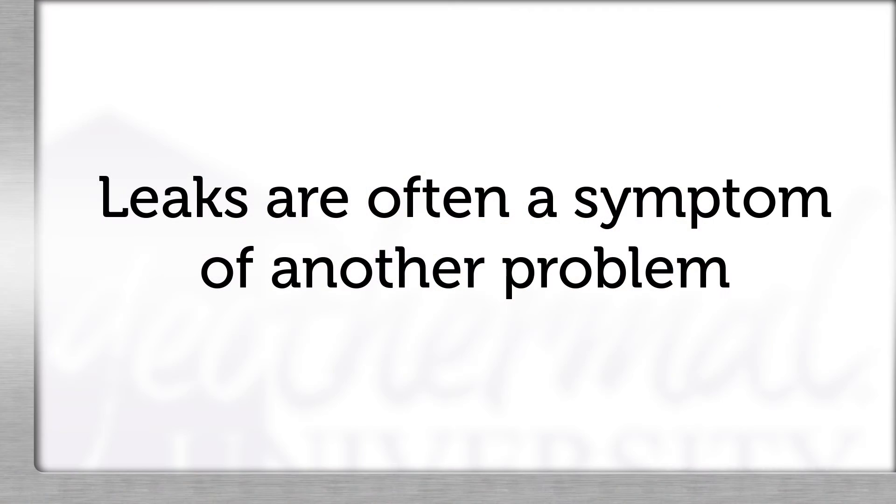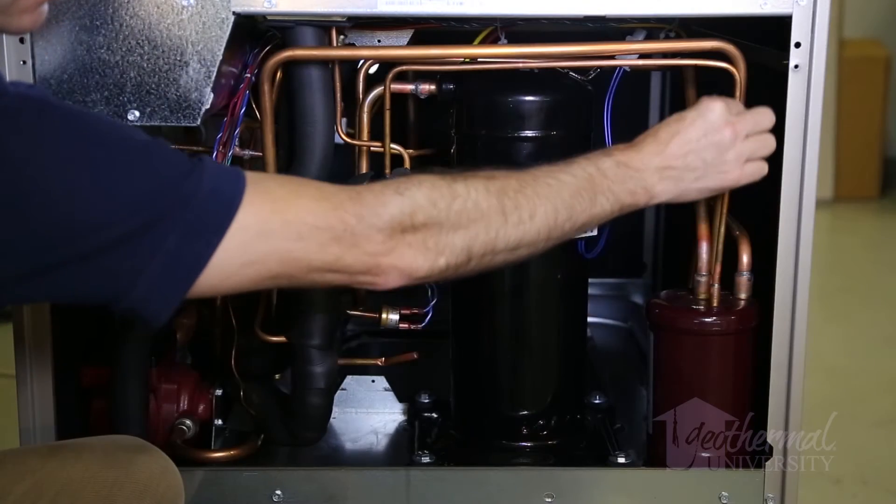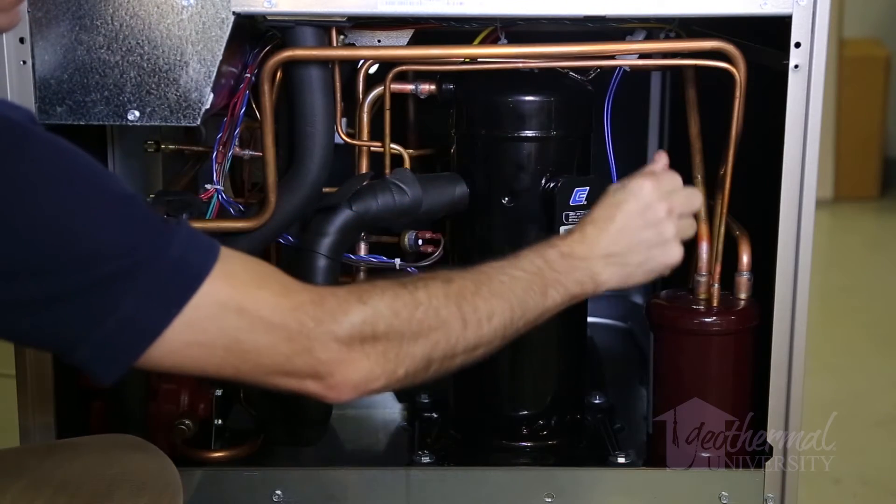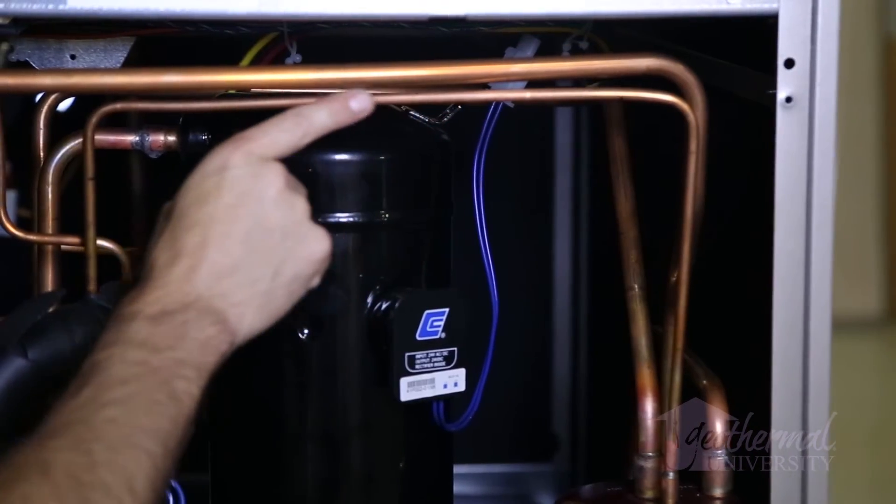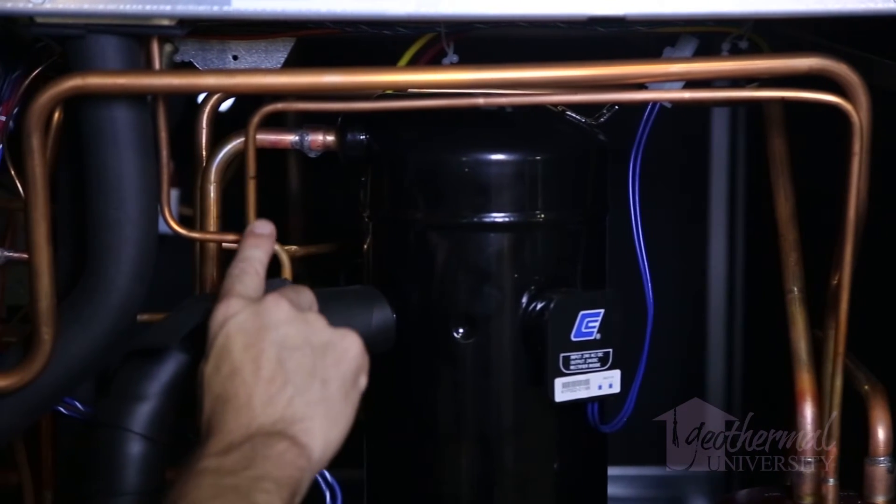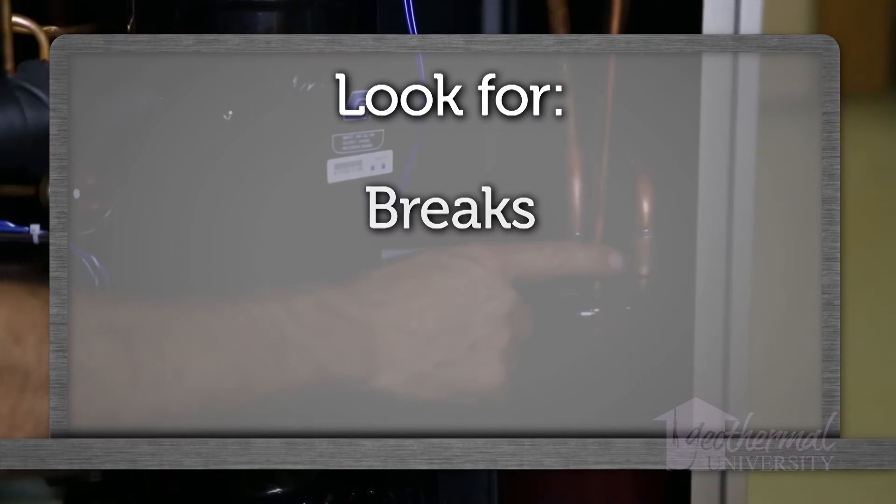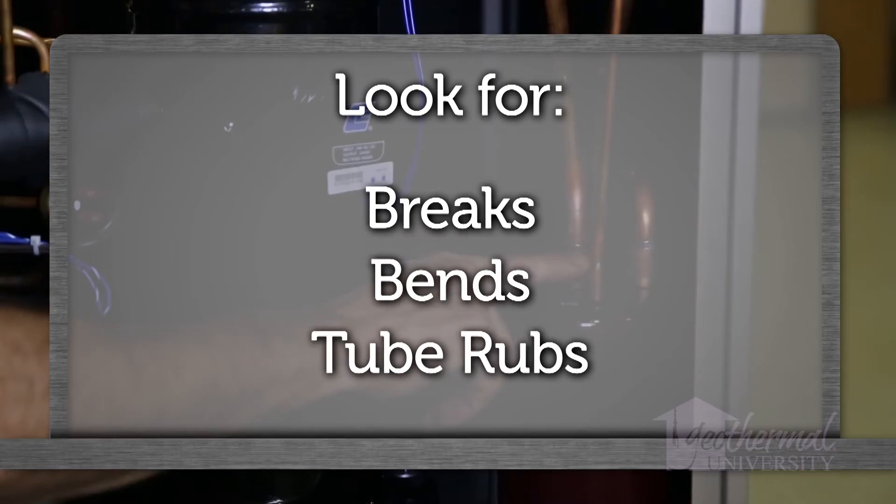Leaks are often a symptom of another problem. For example, many leaks result from vibration. Equalizer lines, process tubes, or refrigerant ports may have been subjected to mechanical vibration. Look for brakes, bends, or tube rubs.